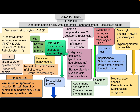Pancytopenia: history, physical examination, and laboratory study. Patients may need a complete blood count with differential, peripheral smear, and reticulocyte count. If there is macrocytic anemia with increased MCV and decreased reticulocyte count, with or without hypersegmented neutrophils, this may be megaloblastic anemia, Fanconi anemia, or dyskeratosis congenita. If there is evidence of hemolysis with increased retic count more than 2-3% and Coombs-negative, this could be sepsis, shock, splenic sequestration, or paroxysmal nocturnal hemoglobinuria. If Coombs-positive, this could be autoimmune pancytopenia like systemic lupus erythematosus.